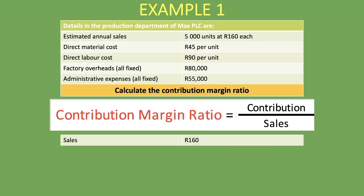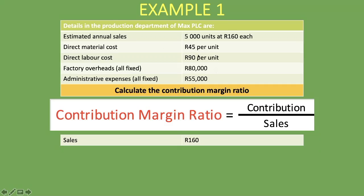What is our variable cost? We have direct material cost and direct labor cost — those two make up our variable cost. Factory overheads and administrative expenses are fixed. So we add the direct material cost of R45 plus the direct labor cost of R90, which gives us a variable cost of R135.